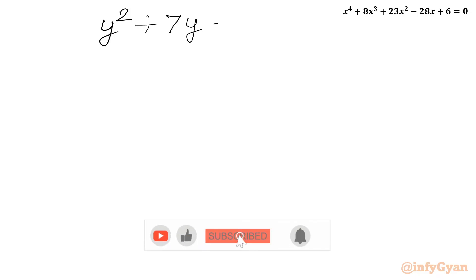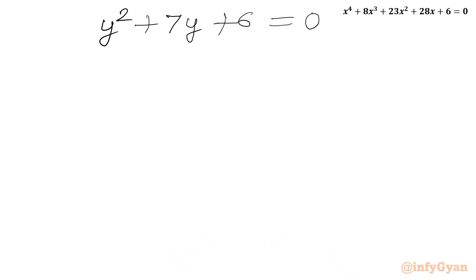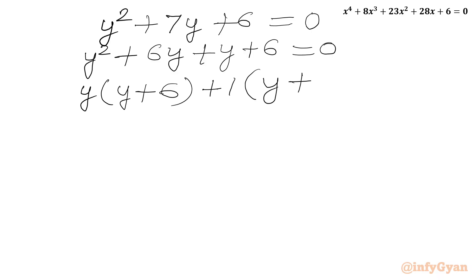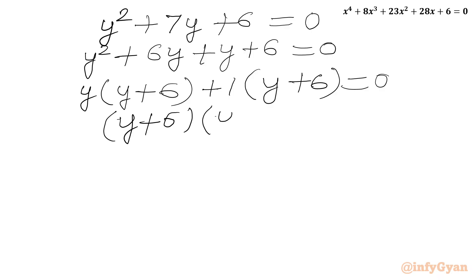So we will write y squared plus 7y plus 6 equal to 0. Factors of 6 — we can consider 6 times 1, so a split of 7y would be 6y plus y. Using the factorization method: y squared plus 6y plus y plus 6 equal to 0. From the first two terms y is common, giving y(y plus 6). From the last two terms 1 is common, giving 1(y plus 6). So taking (y plus 6) common out, we get (y plus 6)(y plus 1) equal to 0.